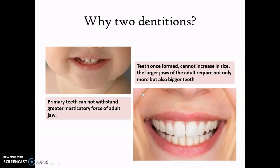What is the need for two dentitions? Once formed, teeth will not increase in size, but the jaws continue to grow. So the larger jaws of adults require larger teeth as well as more number of teeth. Masticatory muscles also strengthen as the individual grows, thereby increasing the masticatory forces. The primary teeth cannot withstand these greater masticatory forces in adults. That's why primary dentition has to be shed off and replaced by permanent dentition.